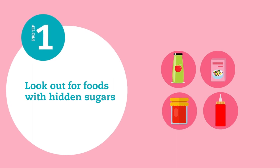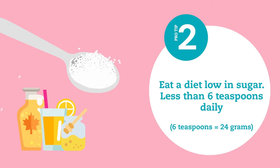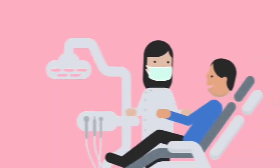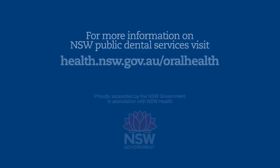Remember to look out for foods with hidden sugars. Eat a diet low in sugar, and brush twice daily using fluoride toothpaste to decrease your risk of developing tooth decay. Visit your dentist regularly to prevent problems and keep on smiling.